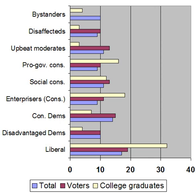Ideological groups are distinguished by certain societal attributes such as religion, marital status, education, and gun ownership, yet are relatively similar in terms of race and ethnicity. Generally, liberals were more likely to be secular, single, and in possession of a college degree, while less likely to own a gun. Conservatives tended to be far more religious and more likely to be married and own firearms. The majority of social conservatives and pro-government conservatives attended church services once a week. Of liberals, a plurality — 43% — attended church services seldom or never, compared to 25% of respondents overall.